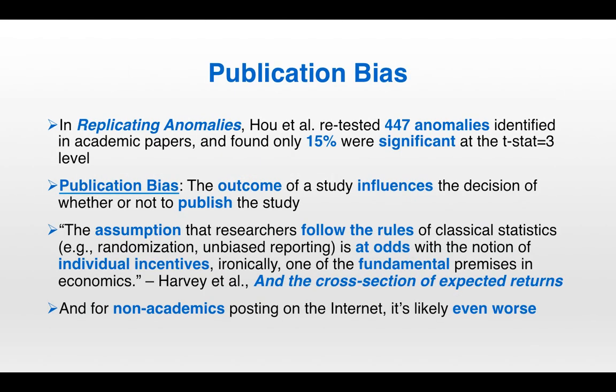Overfitting is even rampant in academia because of publication bias. In the paper 'Replicating Anomalies,' Hou et al. retested 447 anomalies identified in academic papers and found that only 15% were significant at the t-stat equals 3 level. Why t-stat equals 3 instead of the more commonly used t-stat equals 2? It's because it's inevitable that there will be some fitting, multiple tests run, and many different parameter sets evaluated, so you need a stricter significance level to ensure results are actually significant. The big takeaway is that only 15% of these studies were actually significant.